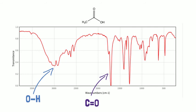So, we identified the two most important functional groups of acetic acid. This is how IR helps us to get information about molecule structures.